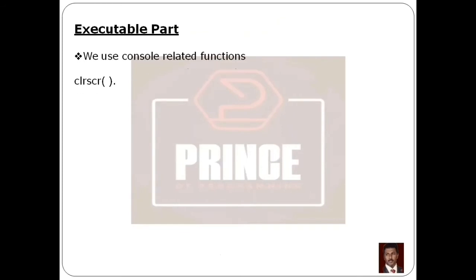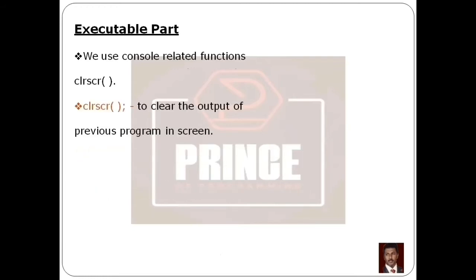The clrscr function is used to clear the output of the previous program from the screen. The previous program output is already in the console. If you have a clear screen function, it is supported in the conio.h header file.